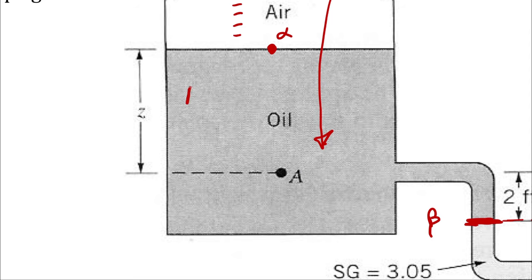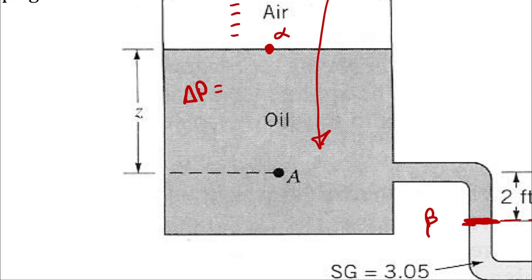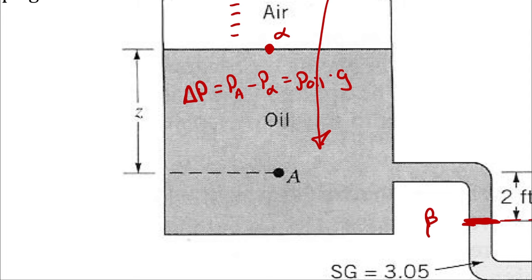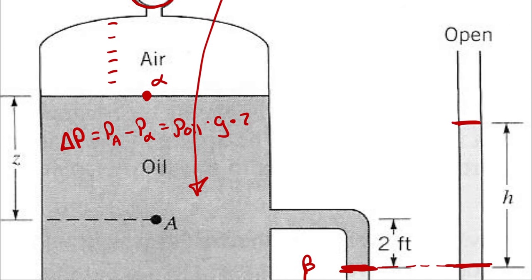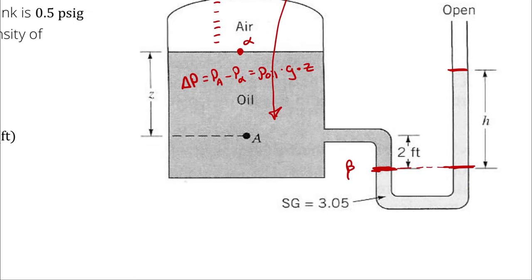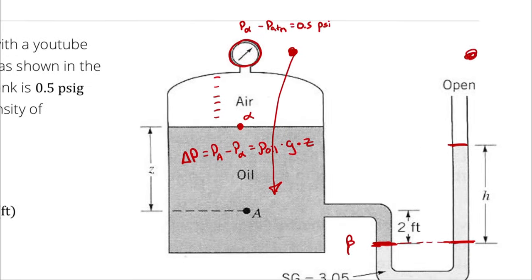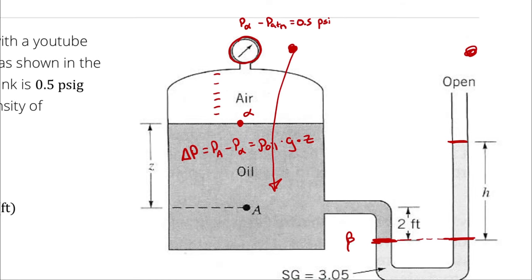I can use the pressure equation to relate the pressure difference between A and alpha, because A is going to have all the pressure of alpha plus the height of the column of oil pushing down on it — density of oil times gravity, which I'm assuming is standard gravitational acceleration at sea level, times the height difference Z.